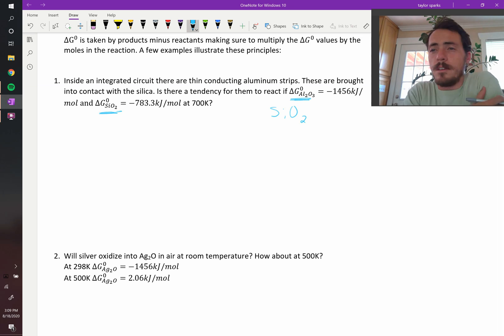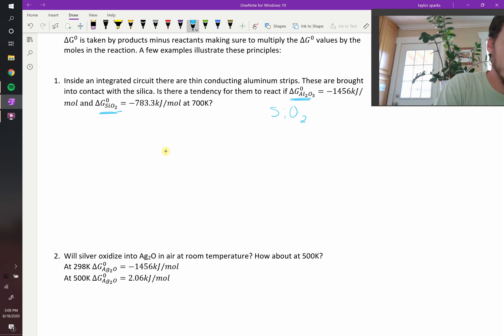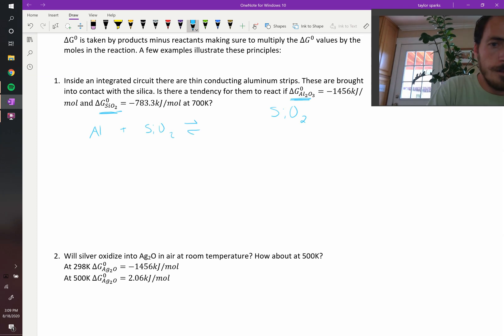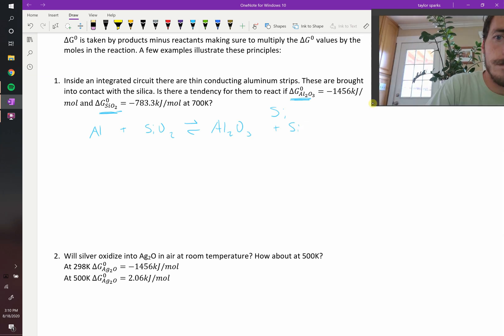So how do we figure this out? The first thing we need to do is it's asking if there's a tendency for them to react. So we should write down the chemical reaction. When we react aluminum with silica, SiO2, what will form? So there's the possibility to form alumina, Al2O3, and silicon.